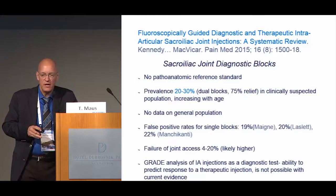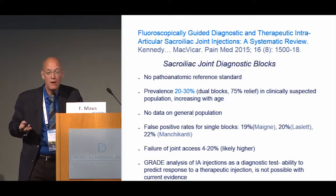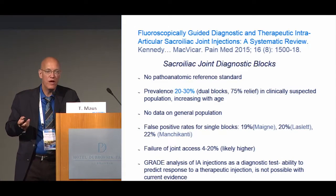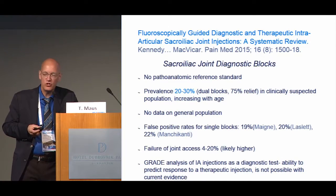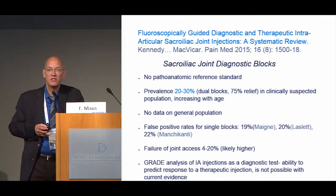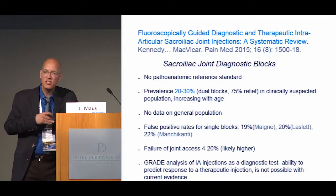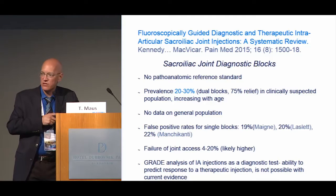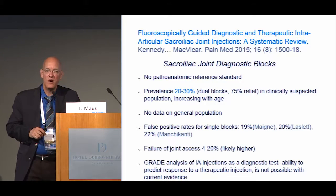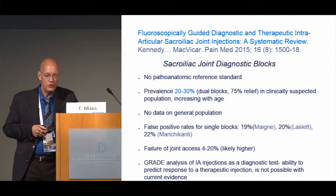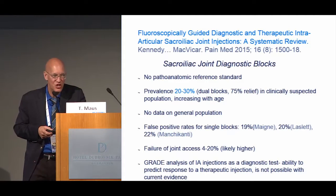The challenge with sacroiliac joint diagnostic blocks is that we have no pathoanatomic reference standard — we can't take the joint out and confirm it was painful. We expect a prevalence of somewhere between 20 and 30 percent in a clinically suspected population, but we don't know the prevalence in a general population. Single blocks have a high false positive rate, hovering around 20 percent, so to truly make a diagnosis you need a dual block paradigm. Intercepting that synovial space is not simple — the failure rate in the literature is between 4 and 20 percent, and likely substantially higher in real practice.